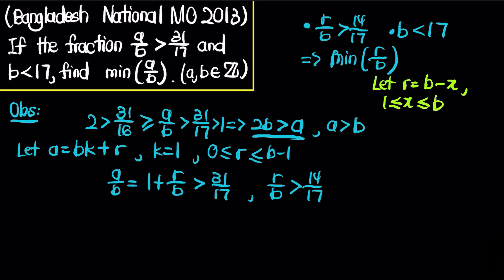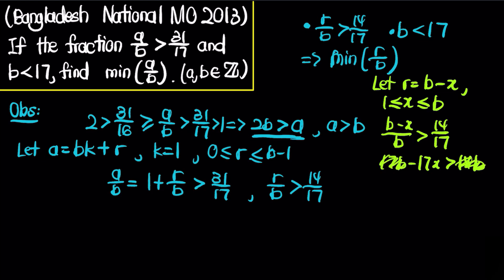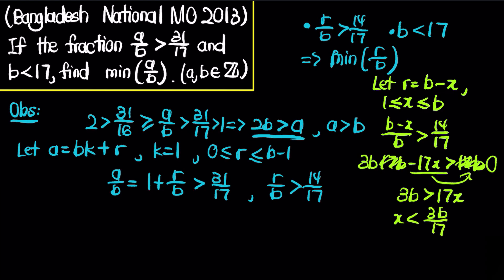Substituting, we have that b minus x over b must be bigger than 14 over 17. Cross-multiplying gives 17b minus 17x must be bigger than 14b. Subtracting 14b from both sides gives 3b minus 17x is bigger than 0, so 3b must be bigger than 17 times x, meaning x must be less than 3b over 17. Since b is less than 17, this is less than 3, which tells us that x must be 1 or 2.